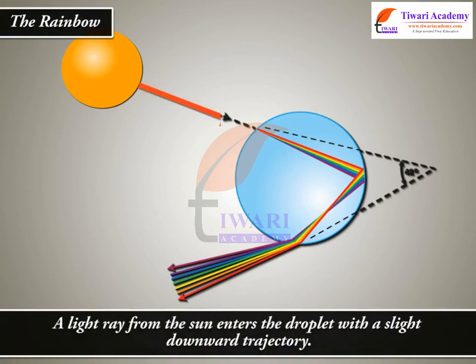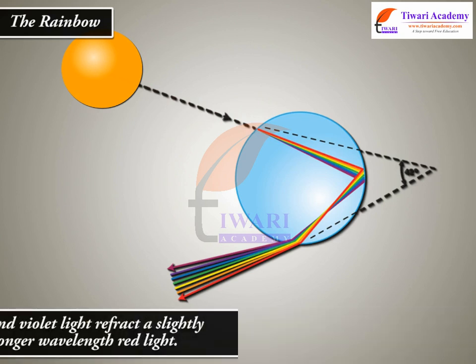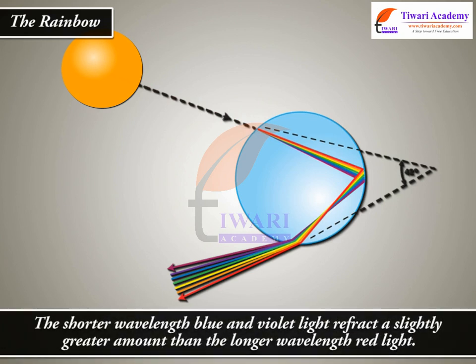A light ray from the sun enters the droplet with a slight downward trajectory. It is first refracted as it enters a raindrop, which causes the different wavelengths and colors of white light to separate. The shorter wavelength blue and violet light refract a slightly greater amount than the longer wavelength red light.